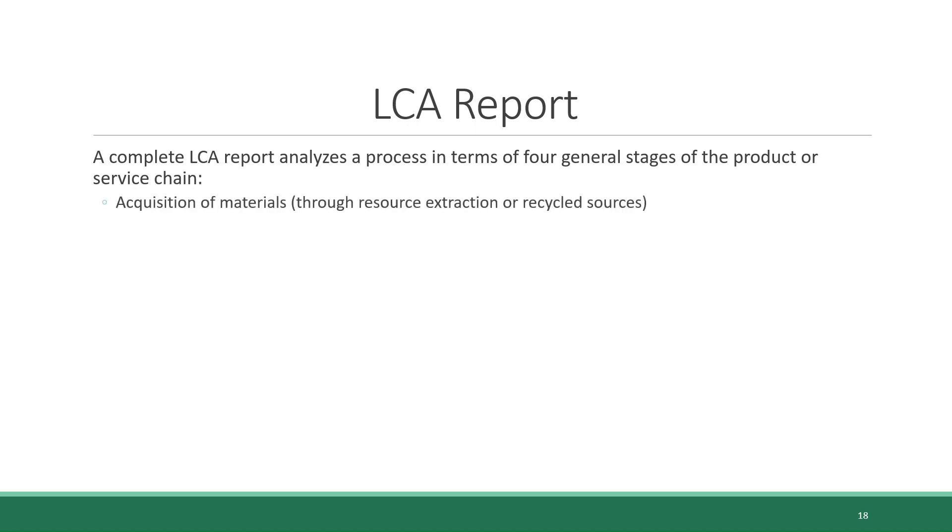An LCA report analyzes a process that can be broken down into four general stages. One, raw material acquisition. This stage includes the extraction and processing of raw materials. It accounts for the environmental impact of activities such as mining, forestry, and agriculture.